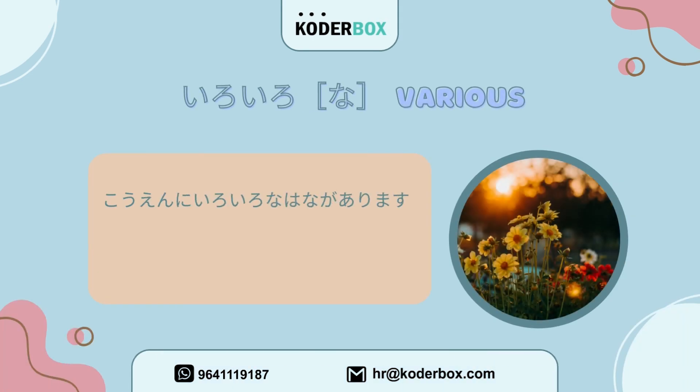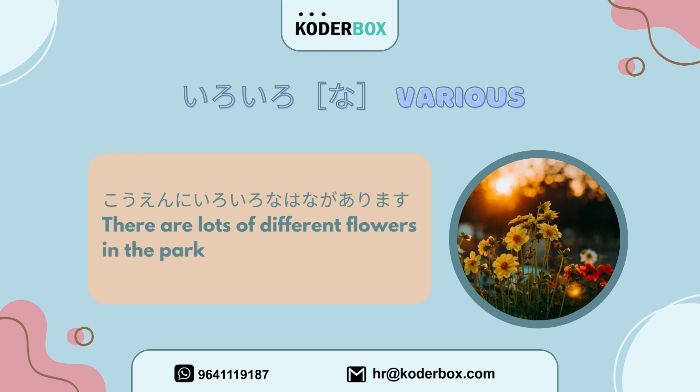Third, iro iro — Various. Kouen ni iro iro na hana ga arimasu. There are lots of different flowers in the park.